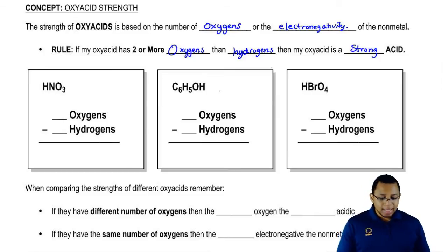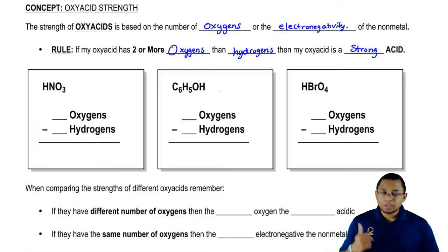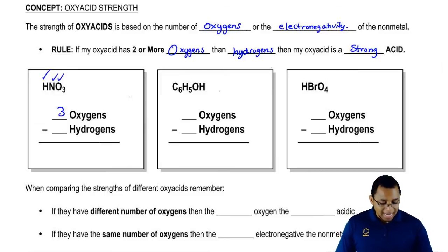Let's see how this works out when we work out the math for these three oxyacids. The first compound, we know it's an oxyacid because it has H, oxygen, and a nonmetal. So let's do the math. We have three oxygens, we have one hydrogen. What do we have left? We have two oxygens left.